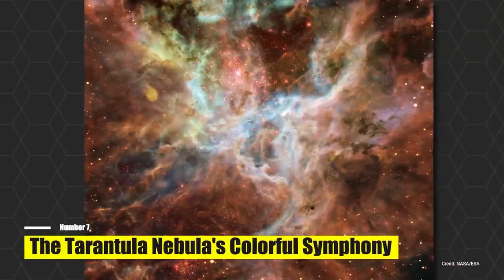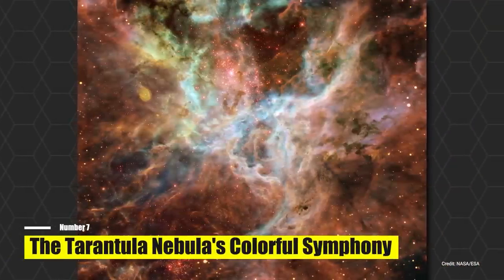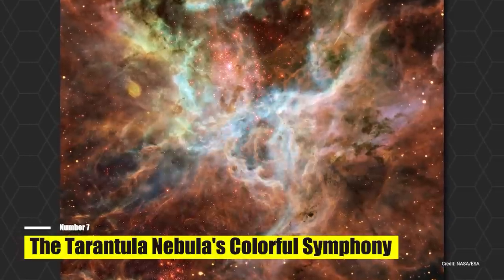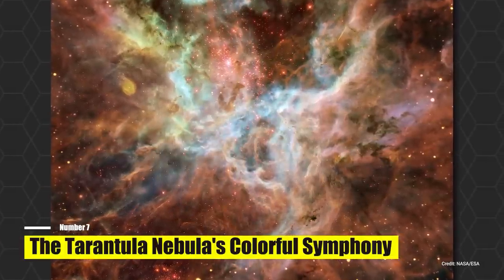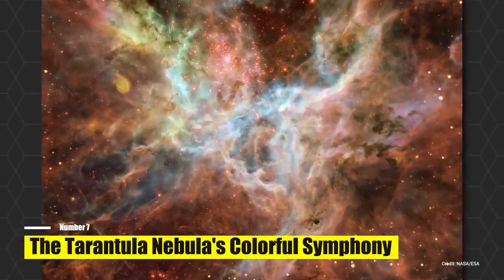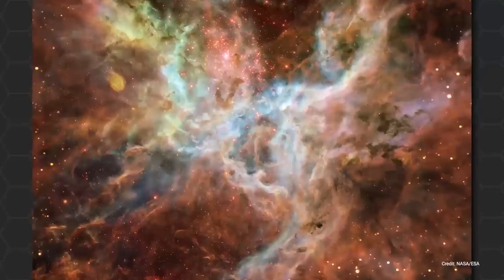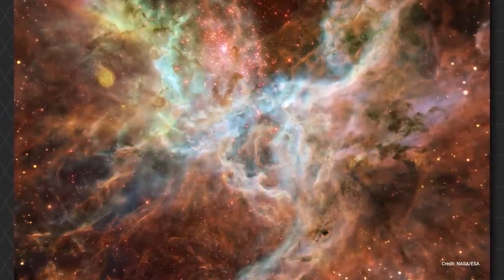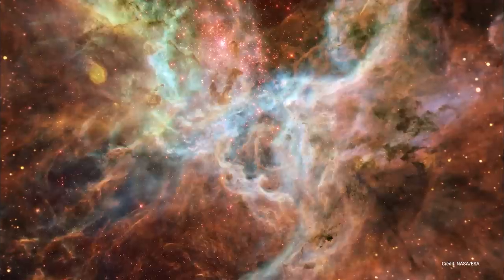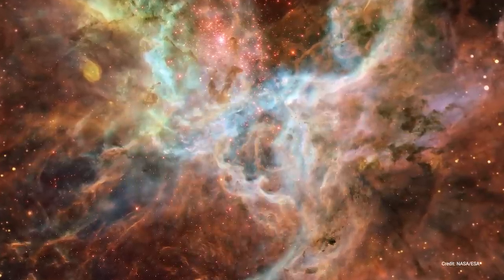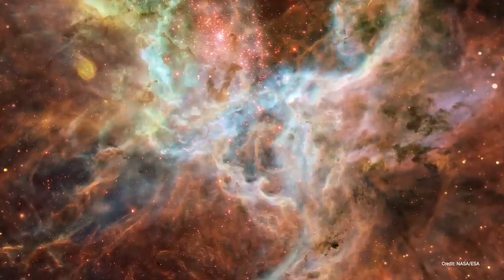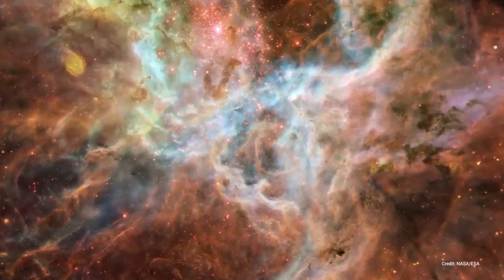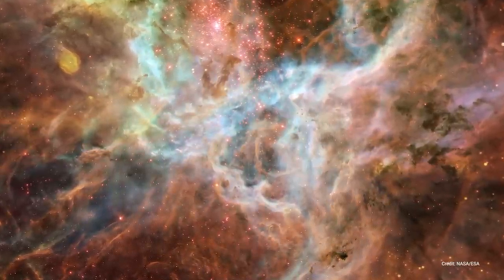Number 7. The Tarantula Nebula's Colorful Symphony. Lying 170,000 light-years away in the Large Magellanic Cloud, the Tarantula Nebula lights up the southern sky. It's visible to the naked eye as a bright, cloudy patch. The LMC, an irregular-shaped mini-galaxy, is believed to be undergoing a tumultuous phase of its existence. It orbits the Milky Way, with several close encounters causing sparks of intense star formation, part of which we see as the Tarantula Nebula.